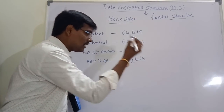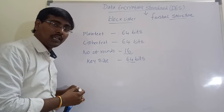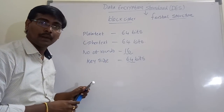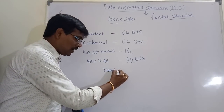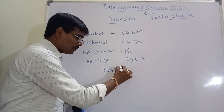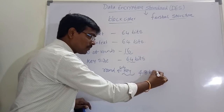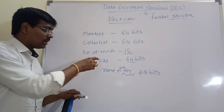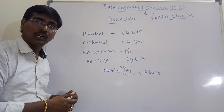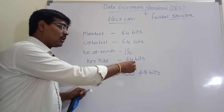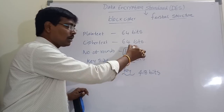The key size is 64 bits and the number of rounds are 16. For each round, we are providing a separate sub-key of size 48 bits. To perform encryption at each round, we are providing a sub-key. Each sub-key is of size 48 bits. That is, from the 64 bits, we are generating 16 number of sub-keys.